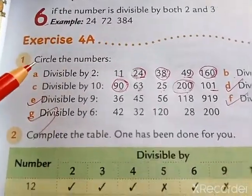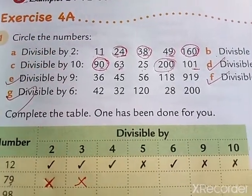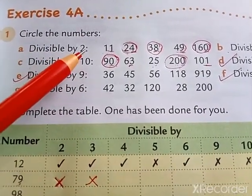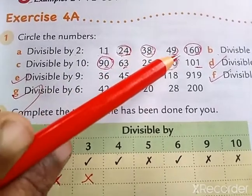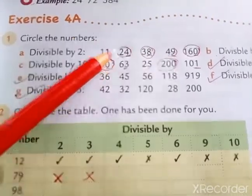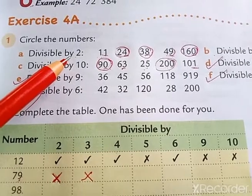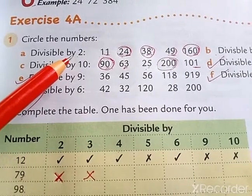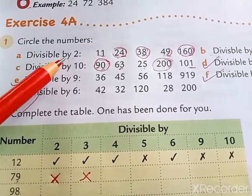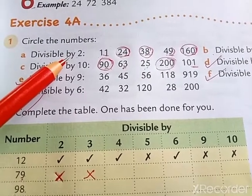Now look at the first question. Circle the numbers. First one, divisible by 2. So they have given 5 numbers. Out of these 5 numbers, which are divisible by 2, you have to circle. So what's the divisibility rule of 2? The last digit must end with 0, 2, 4, 6 or 8.